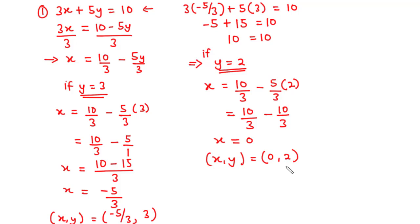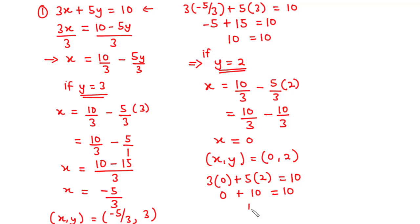Let's substitute the values x equals 0 and y equals 2 into the original equation: 3 times 0 plus 5 times 2 equals 10. That gives 0 plus 10 equals 10, so 10 equals 10. Since the left-hand side equals the right-hand side, (0, 2) is also a solution to this linear equation. In conclusion, since for any y value we obtain a corresponding x value, the linear equation 3x plus 5y equals 10 has infinitely many solutions.